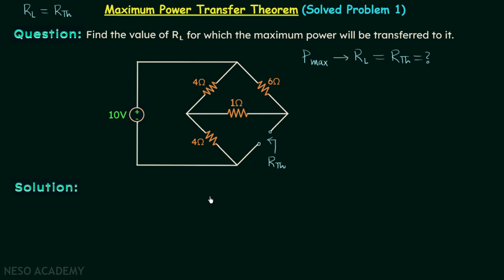That is modification number one. Moving on to modification number two: we are required to turn off all the independent sources present in the network. In this network we have only one independent source present, and we will turn it off by replacing it with a short circuit. So we are all set to find out RTH.